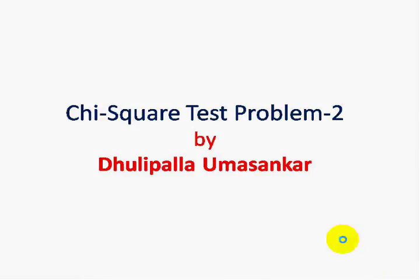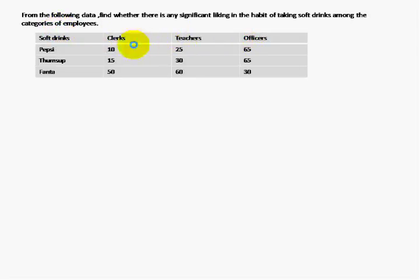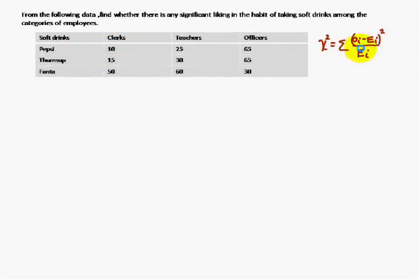Today we are going to discuss the chi-square test problem. From the following data, find whether there is any significant liking in the habit of soft drinks among the categories of employees: collectors, teachers, and office staff. The chi-square test formula is (Oi minus Ea) whole square by Ea.